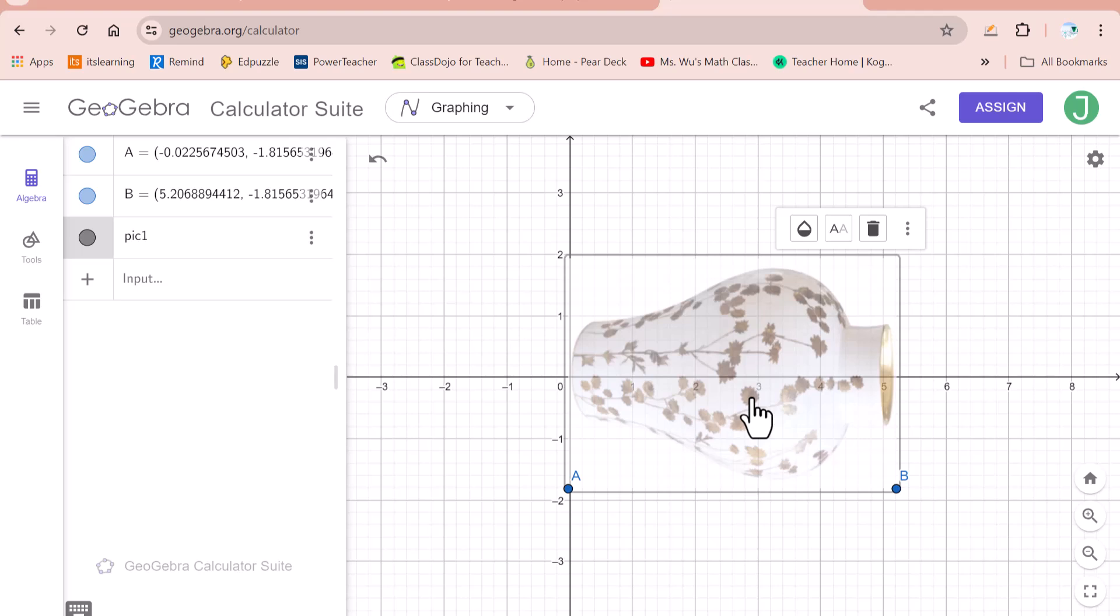After this, right click the image. Click on fix the object, so that the image won't move anymore.